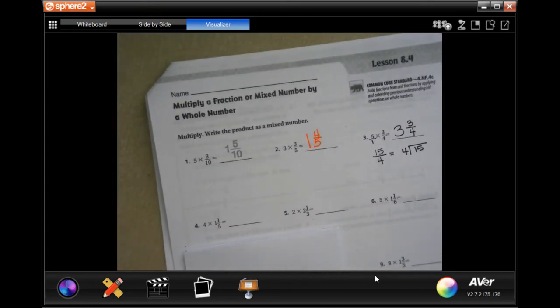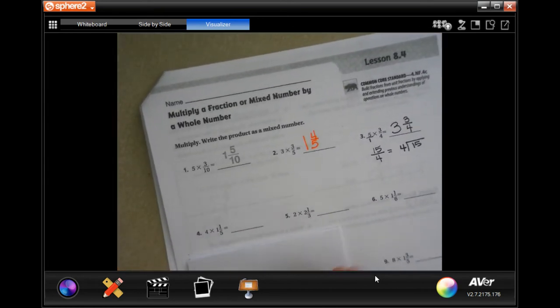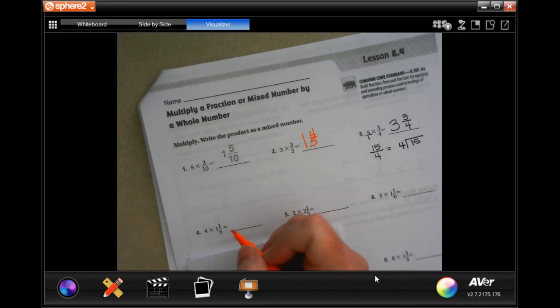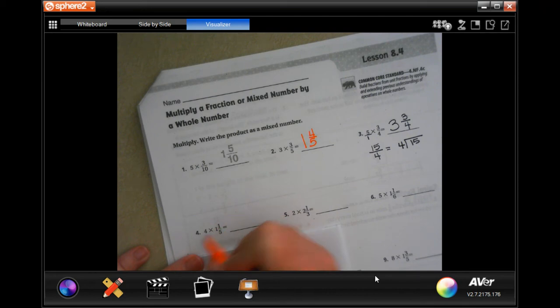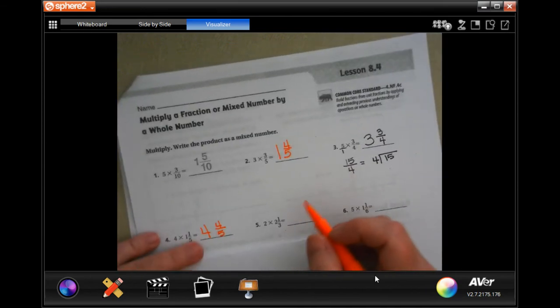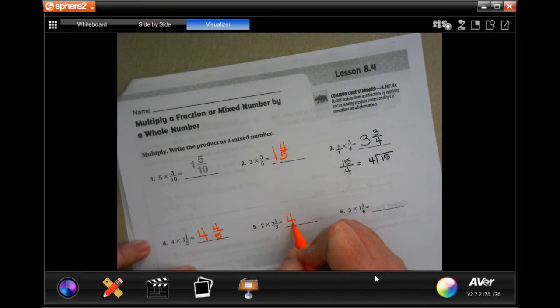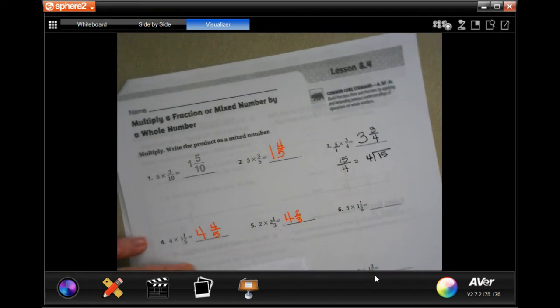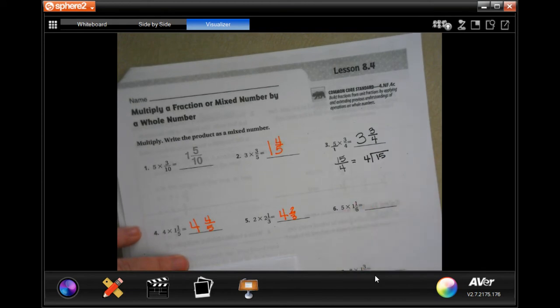So now we're going to, instead of me turning that into an improper fraction, multiplying across, and then making it that again, I'm going to go 4 times 1 is 4. 4 times 1 again is 4, and 1 times 5 is 5, because our denominator stays the same. I'm going to do that again. You ready? 2 times 2 is 4. 2 times 1 is 2, and our denominator stays the same. That's when you're multiplying it by a mixed number.